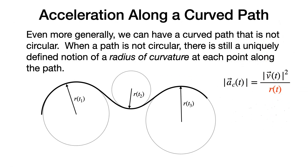More generally, we can have a curved path that is not circular. When a path is not circular, there is still a uniquely defined radius of curvature at each point along the path — something that can be determined geometrically. At any given point, knowing the radius of curvature and the instantaneous speed, we can calculate the centripetal acceleration along any curved path. It will always point inward toward the curve and be perpendicular to the instantaneous velocity, with a tangential acceleration given by the rate of change of speed with respect to time.